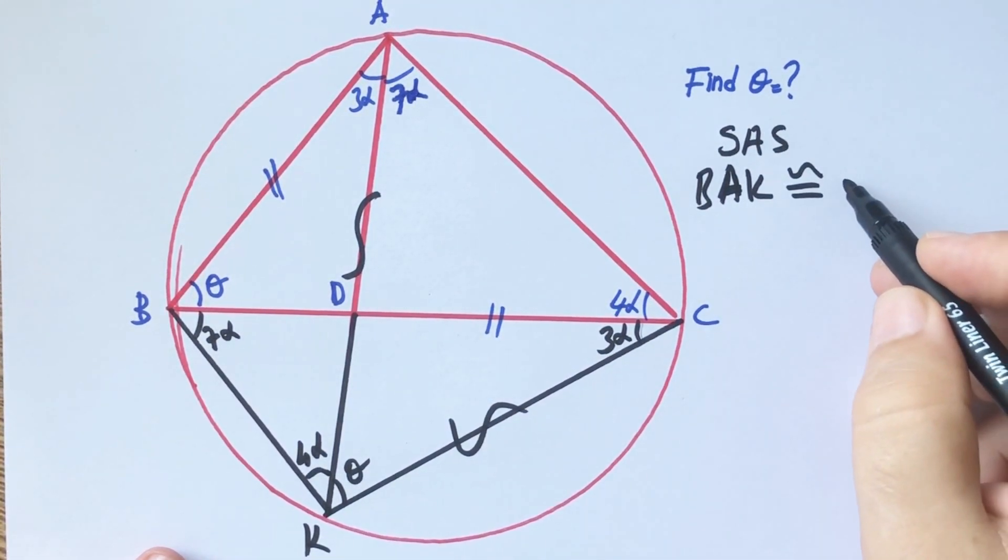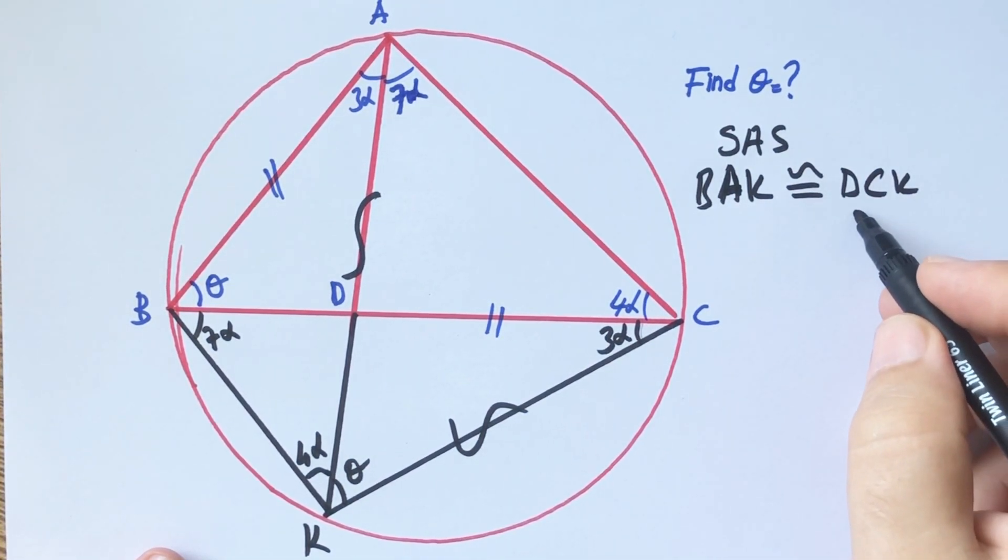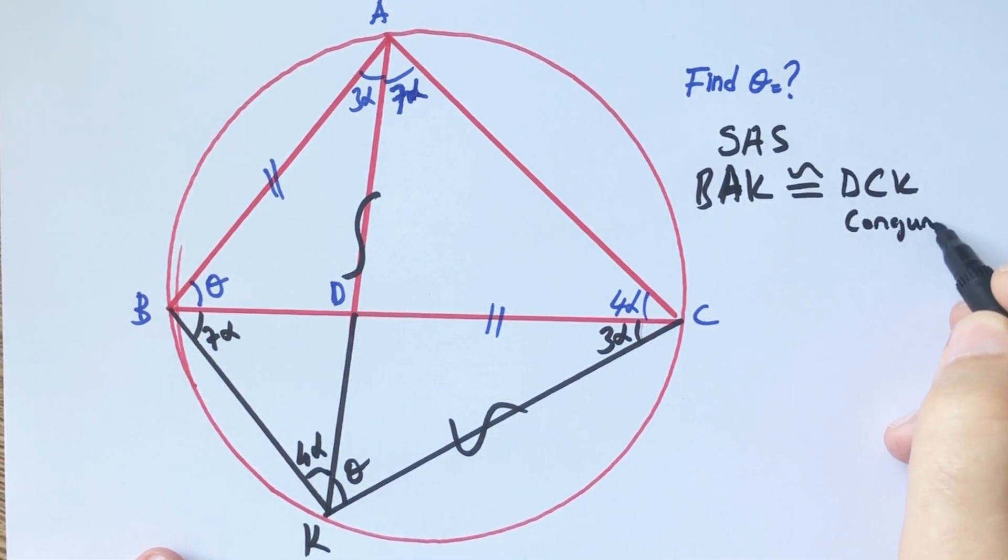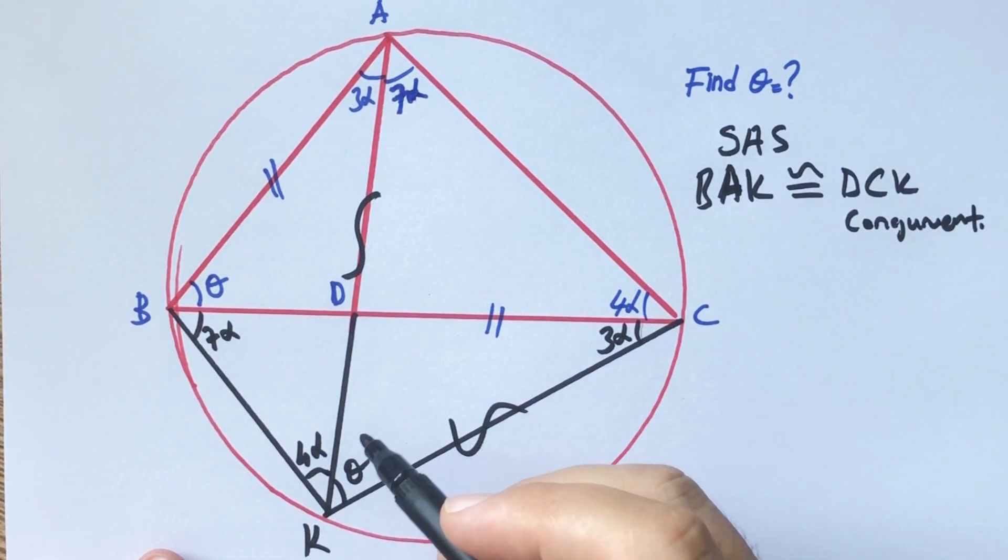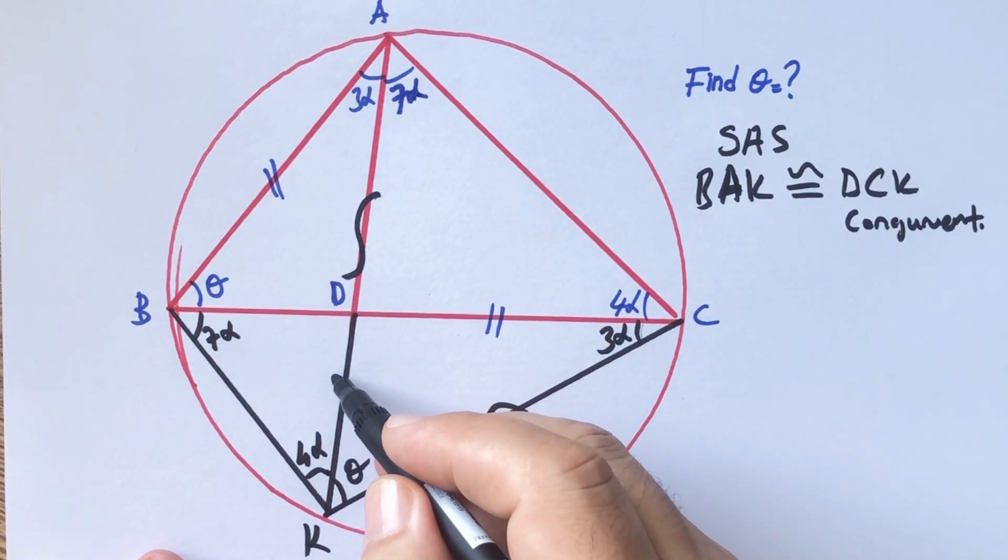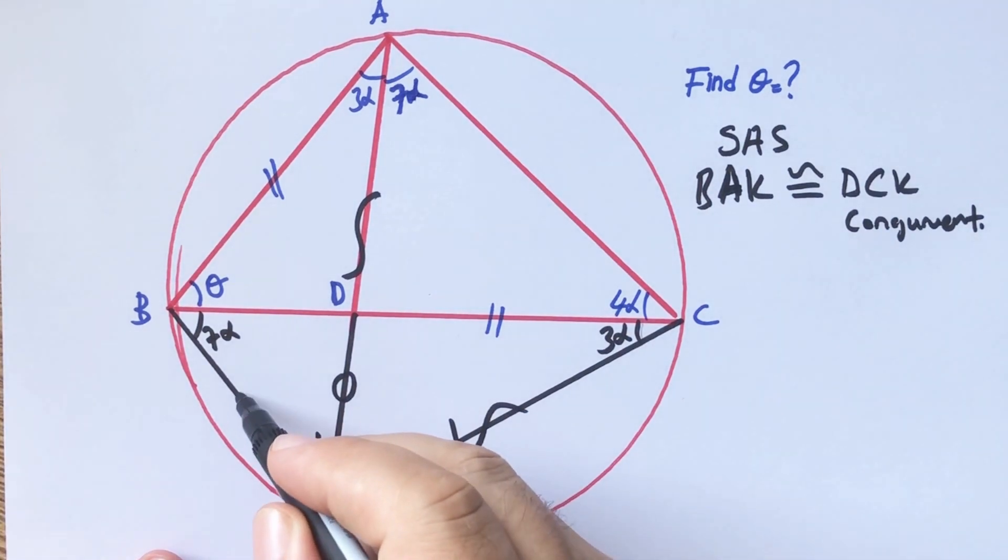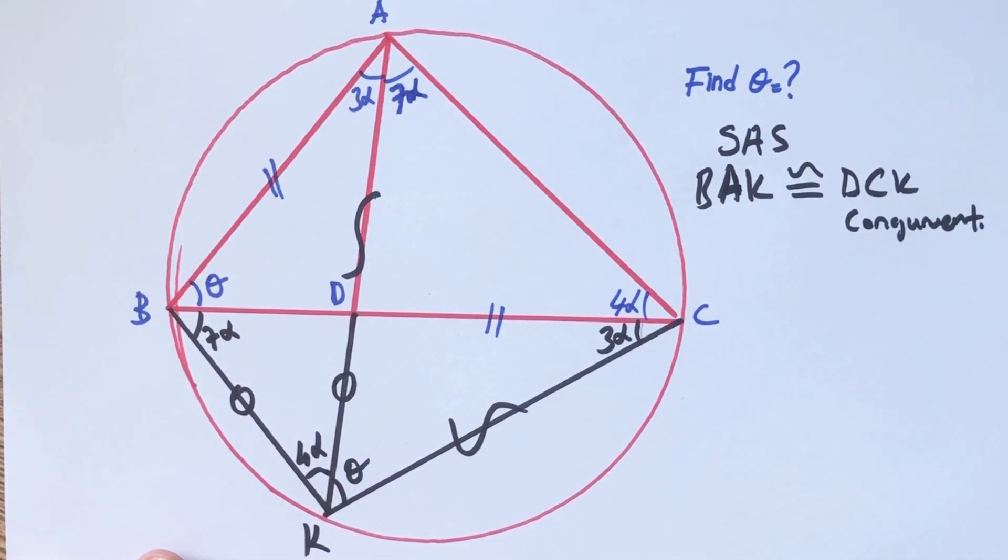We know that congruent triangles have same angles and same length. That means this length, which is opposite of the three alpha, must be equal this length, which is opposite of the three alpha.